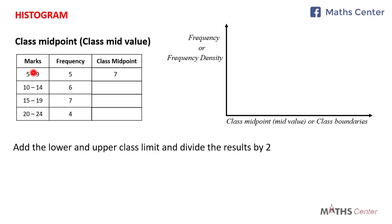So: 5 + 9 = 14, divided by 2 gives 7. Then 10 + 14 = 24, divided by 2 gives 12. Then 15 + 19 = 34, divided by 2 gives 17. And 20 + 24 = 44, divided by 2 gives 22. This is how you find the class midpoint — add the lower and upper class limits and divide by 2.